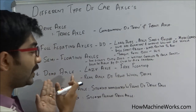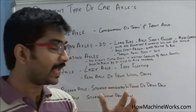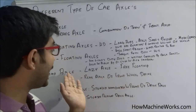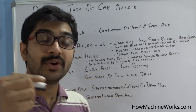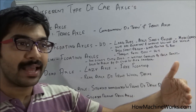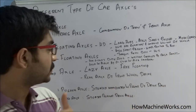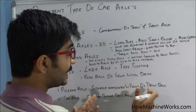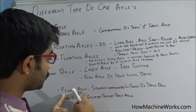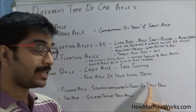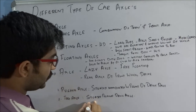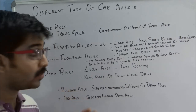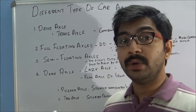Then we have the dead axle, also called the lazy axle — it's a type of free floating axle. The rear axle of a front wheel drive vehicle is called a dead axle, meaning it does not get any drive from the engine. Dead axles can be classified as pusher axles and tag axles. A pusher axle is a dead axle situated immediately in front of a drive axle. A tag axle is a dead axle situated just behind the drive axle.